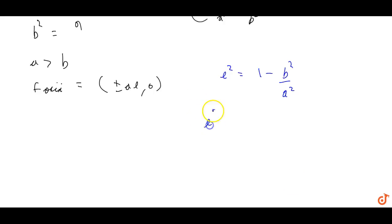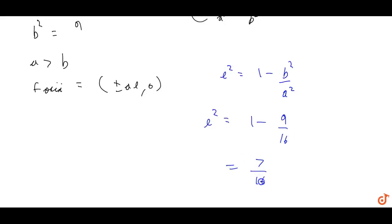We calculate the eccentricity: e² = 1 minus 9 by 16, so e = √7 by 4.